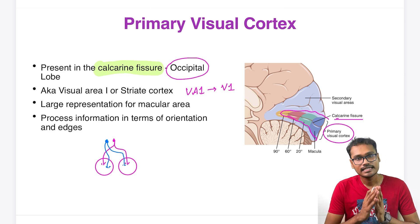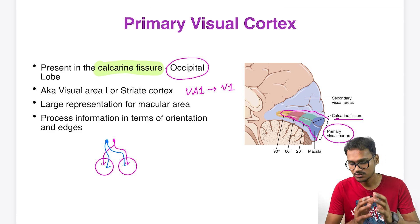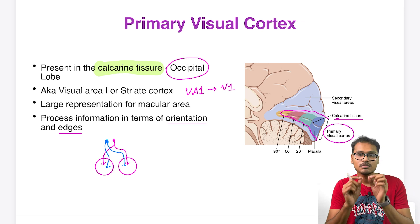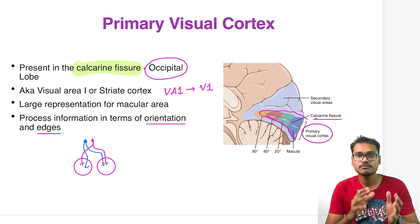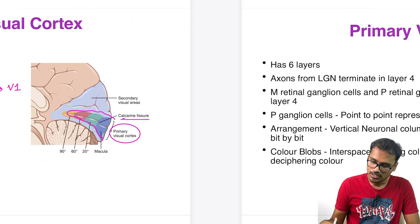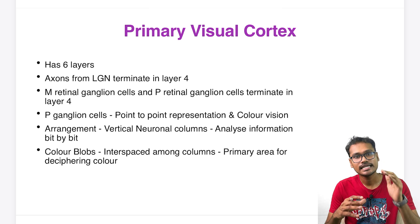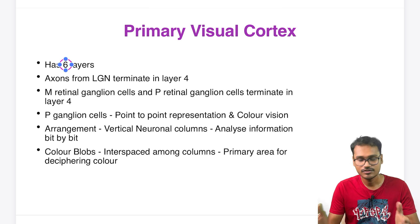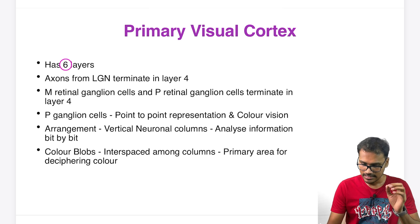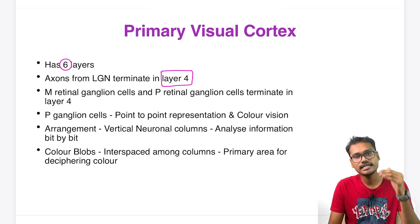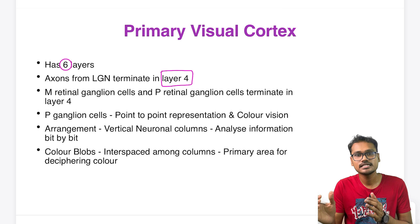The macula has a huge, larger representation compared to any other field of vision. The primary visual cortex performs orientation and edge detection, and some amount of color perception, but color is majorly perceived by the secondary visual cortex. The primary visual cortex also has six layers, just like any cortical area.